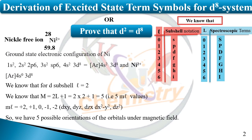For l equal to 2 we have the d subshell. If we put the value of 2 in the equation ml = −l to +l, it tells us about the orientation of the five d orbitals. For the d system we have five ml values, meaning the d orbital can be oriented under the magnetic field in five different directions.